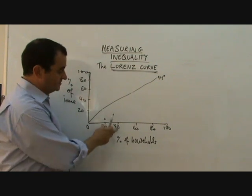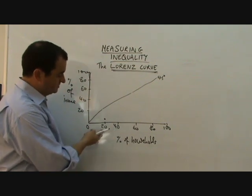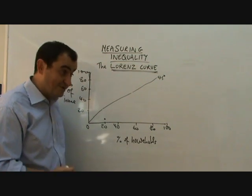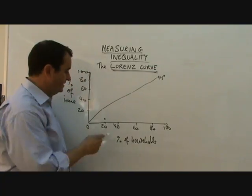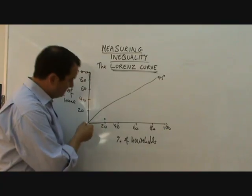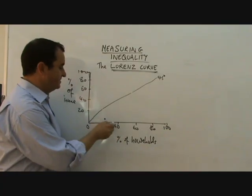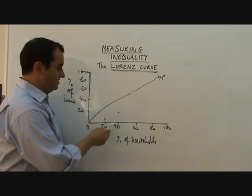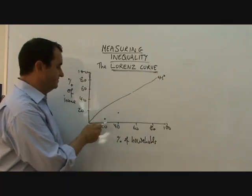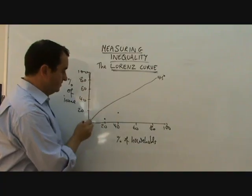The next 20%, because by definition they are not as poor as these 20%, must have more than 5% of the income. Perhaps they've got another 10% of the income. And that would mean that 40% have 5% plus 10% of the income, and might take us to about there. The next 20% may have 20% of the income, and so on and so on.